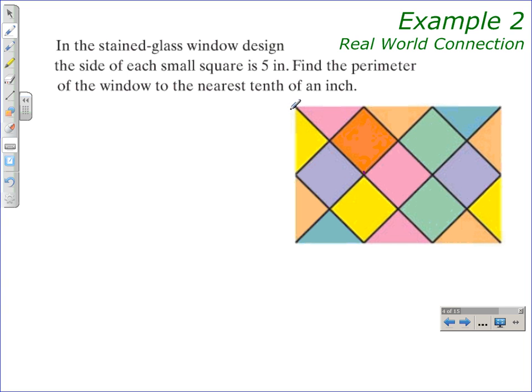Here is a real-world connection to working with radicals. In the stained glass window design, the side of each small square is 5 inches. Find the perimeter of the window to the nearest tenth of an inch.